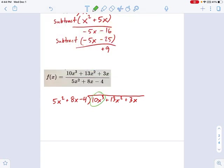What's 10x cubed divided by 5x squared? That is going to be 2x, I think. And now I'm going to do the same thing as before. I'm going to multiply 2x by this big polynomial.